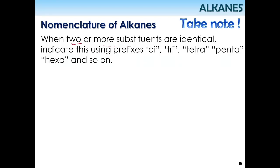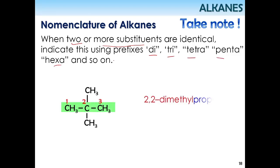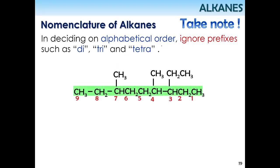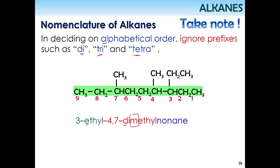When you have two or more of the same substituent, use the multiplying prefixes di-, tri-, tetra-, penta-, hexa-, and so on. For example, if you have two methyl groups attached to the same carbon, you write 2,2-dimethyl. However, when deciding on alphabetical order, the prefixes di-, tri-, and tetra- are ignored. So in the example shown, the name is 3-ethyl-4,7-dimethyl because we take account of M for methyl and E for ethyl, and E comes first alphabetically.